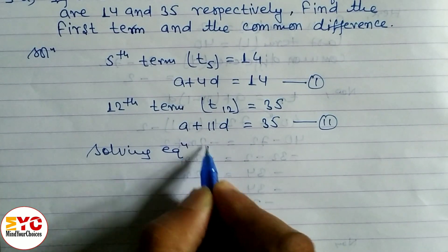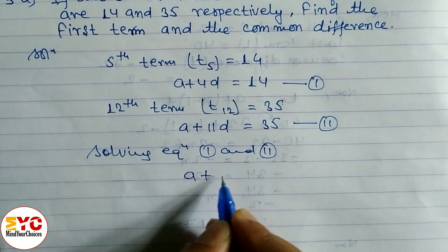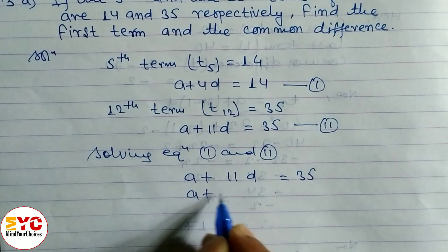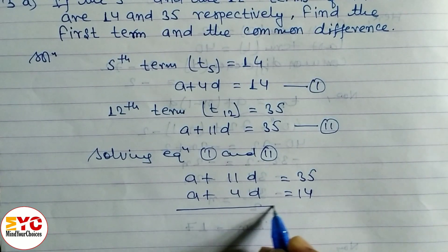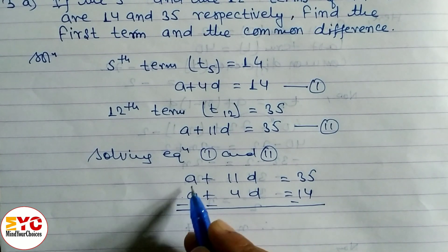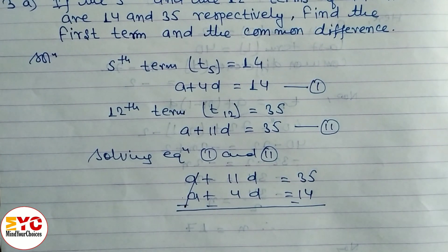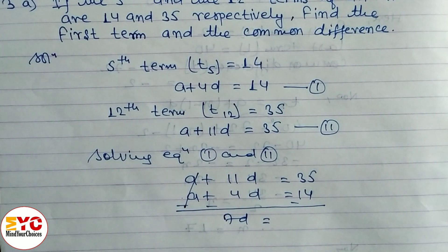Solving equations 1 and 2: A plus 11D equals 35, and A plus 4D equals 14. Let's solve by the elimination method. A and A cancel out. Subtracting: 11 minus 4 gives 7, so 7D equals 35 minus 14, which gives 7D equals 21.